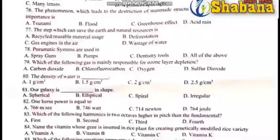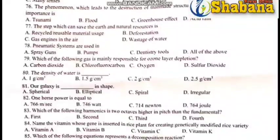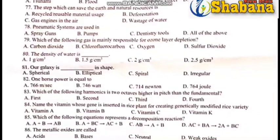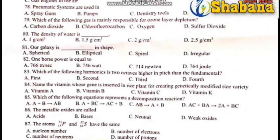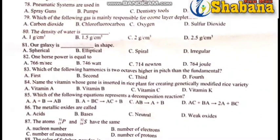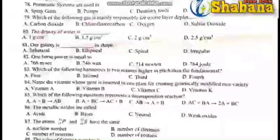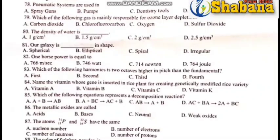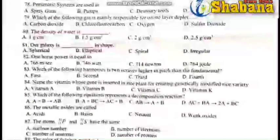Question number 78: The pneumatic system uses compressed air. It is also used for spray guns, oil pumps, dentistry tools. They actually use free air and liquid, but compressed gases are compressed from outside inward. The answer is all of the above — spray guns, air options, and dentistry tools.